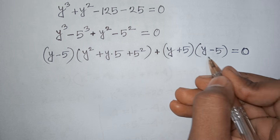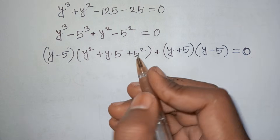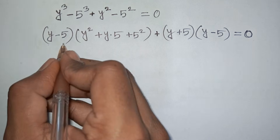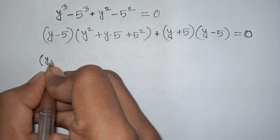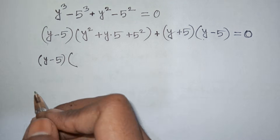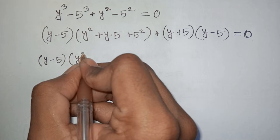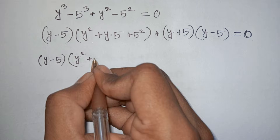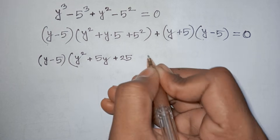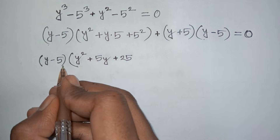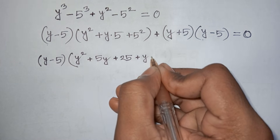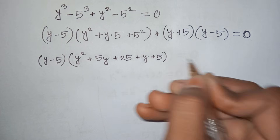Since (y - 5) is a common factor in both terms, we factor it out. Dividing through by (y - 5) cancels that factor, leaving: (y - 5) times [y² + 5y + 25 + y + 5] = 0, which simplifies to (y - 5)(y² + 6y + 30) = 0.